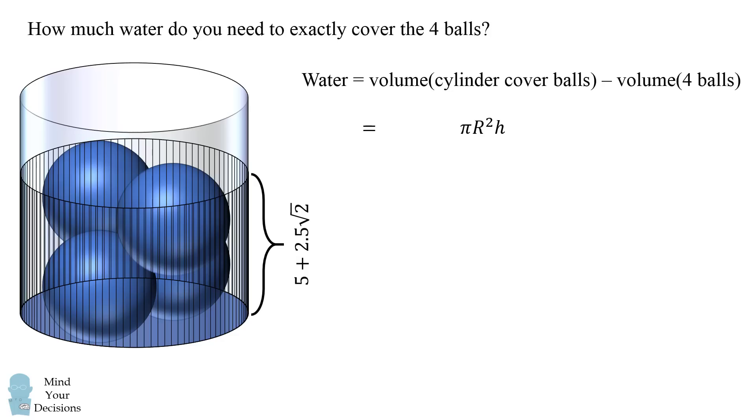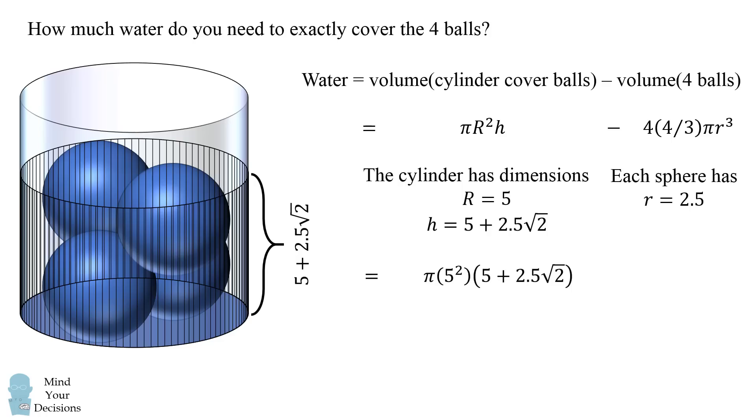The volume of a cylinder is π times its radius squared times its height. Each sphere has a volume of 4/3 π r³, and then we multiply that by 4 because there are four balls. The cylinder has a radius of 5 and a height of 5 plus 2.5 times the square root of 2. The sphere each has a radius of 2.5. So we can substitute in these parameters.